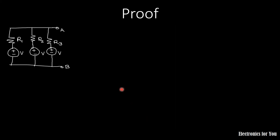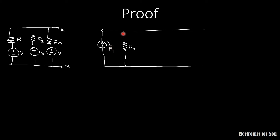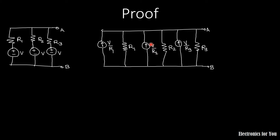Now let us see the proof for that. Consider this voltage source distributed to each and every resistance — we can also consider impedances, but here I am considering resistances. This voltage source is individually divided to these resistances. Now if we convert this voltage source and series resistance into a current source and a parallel resistance as per the source transformation rule, the current source will have the value V upon R1. Similarly, the second voltage source and series resistance is also converted into a current source with value V upon R2, and for the third, it is V upon R3 with parallel resistance R3.